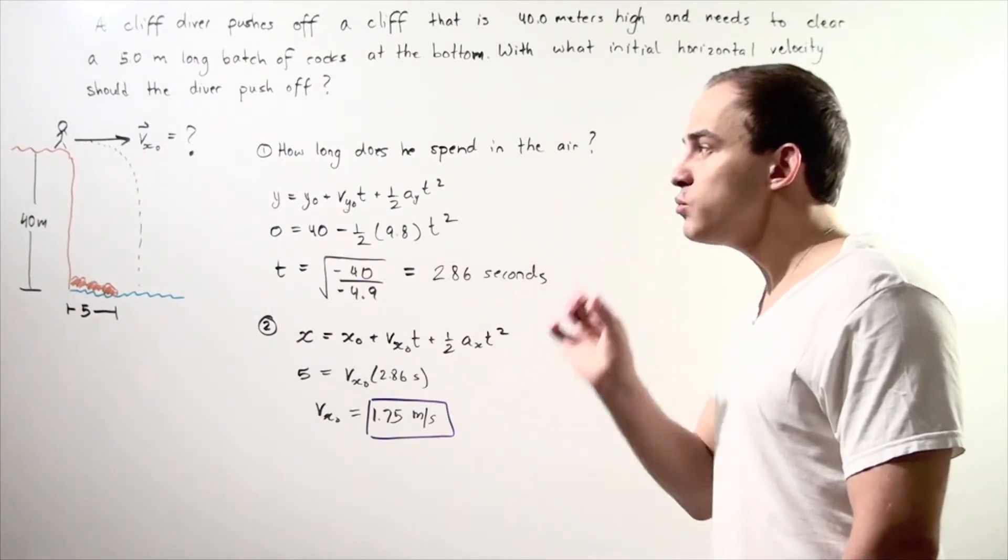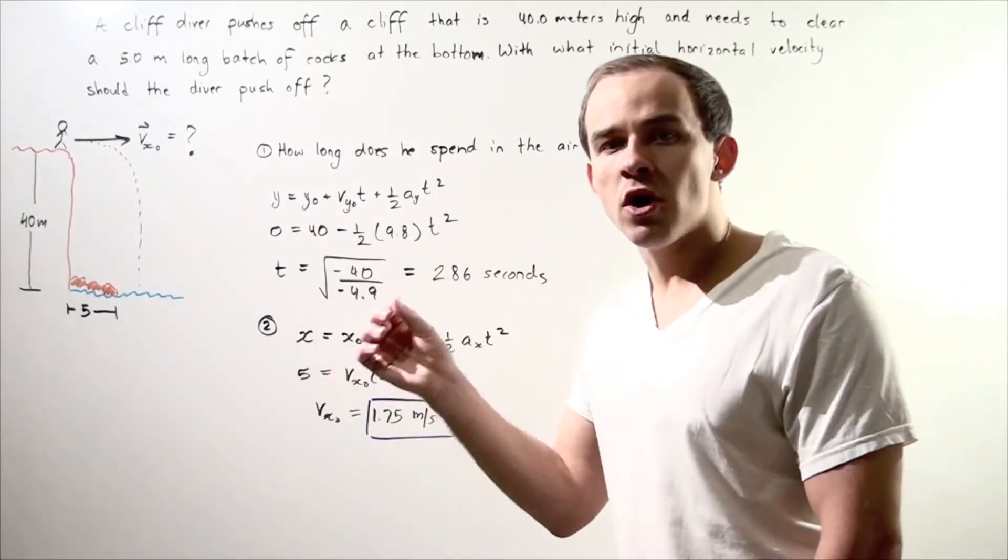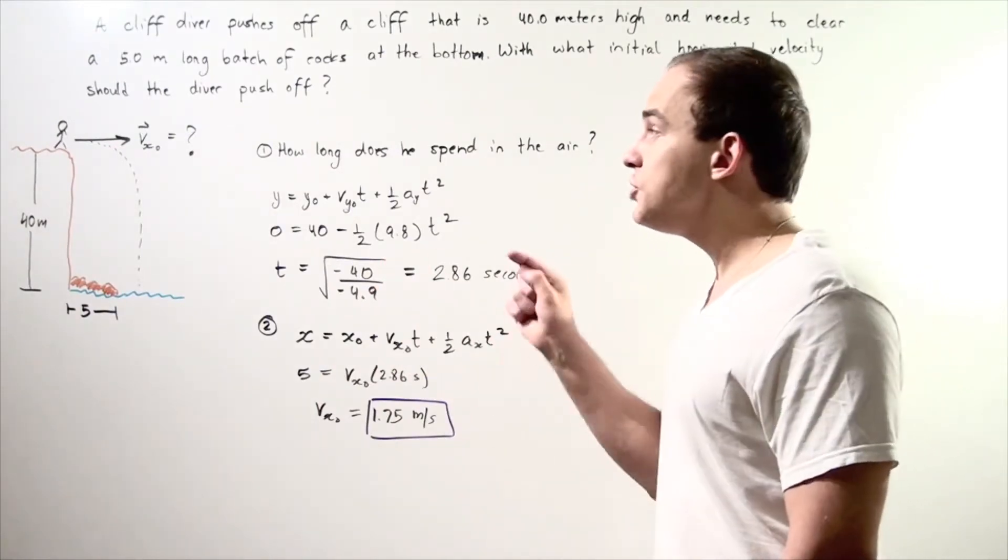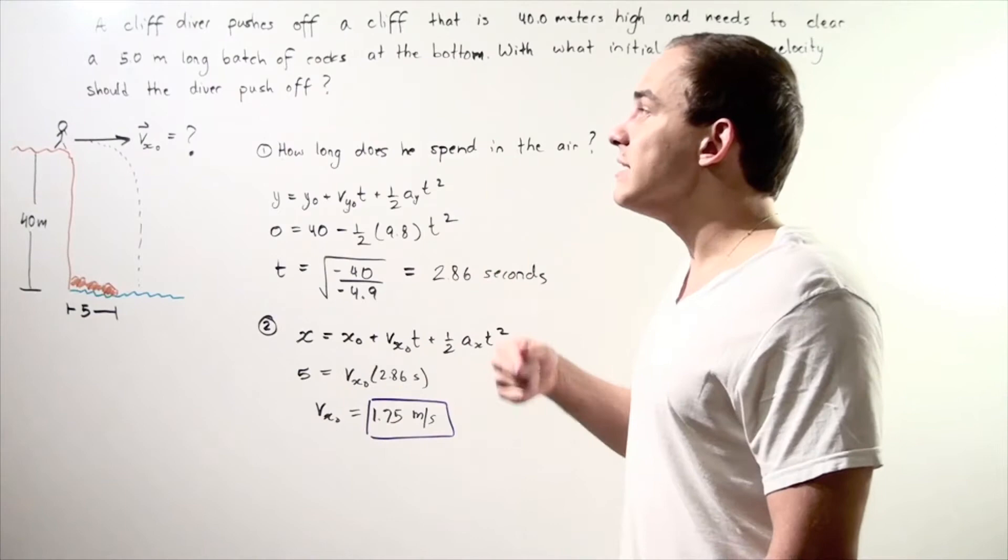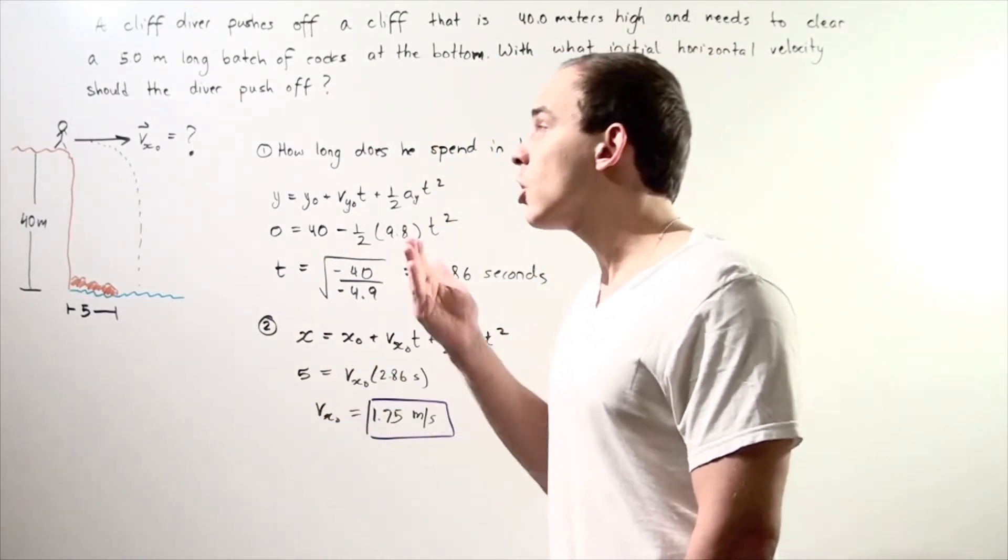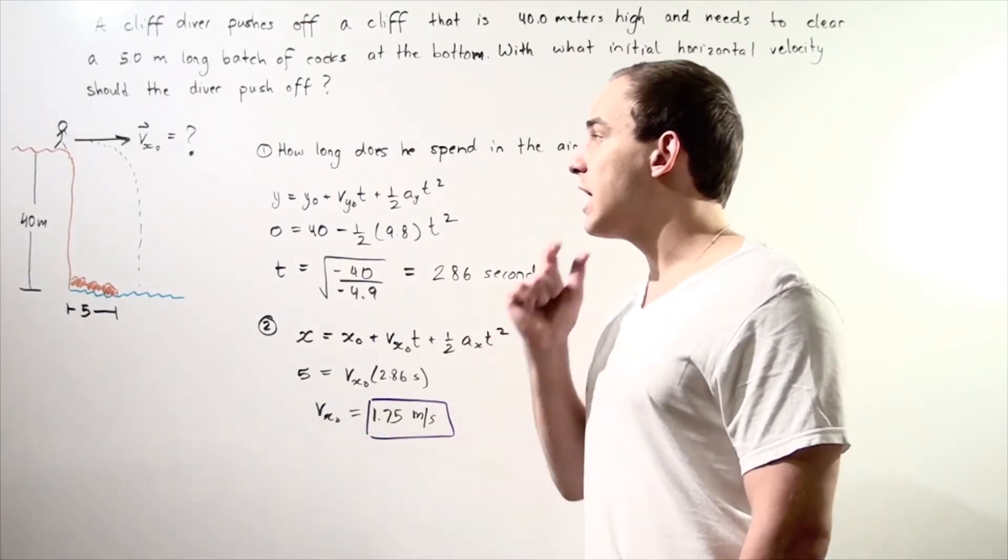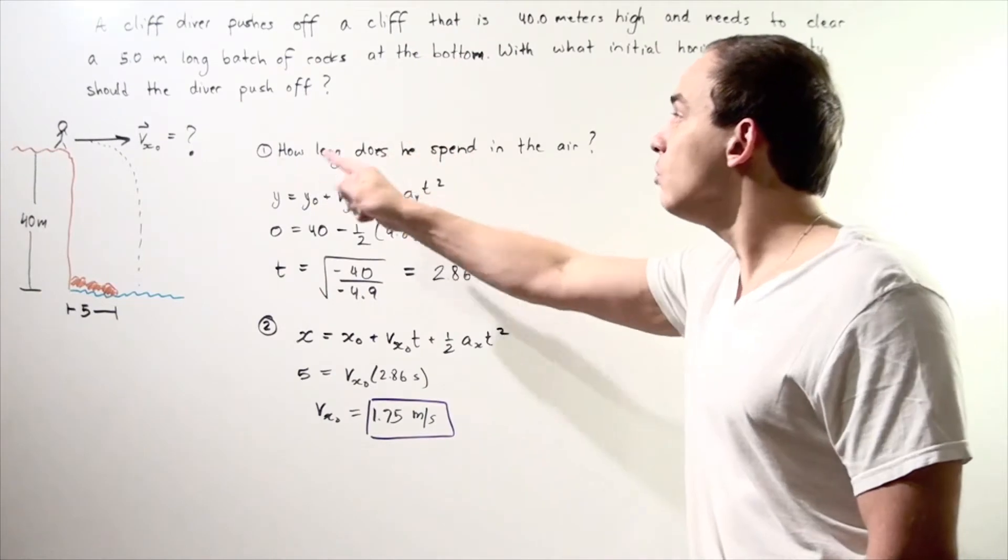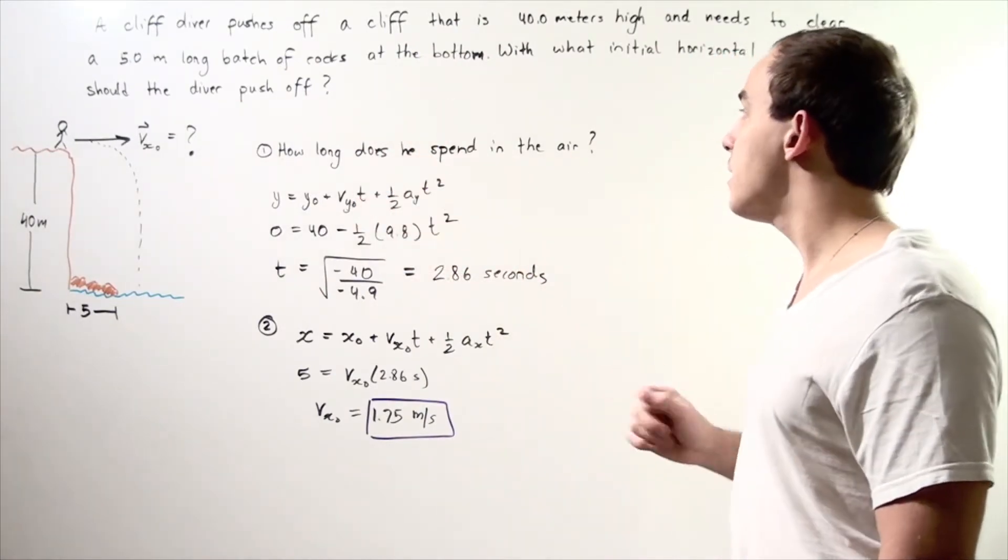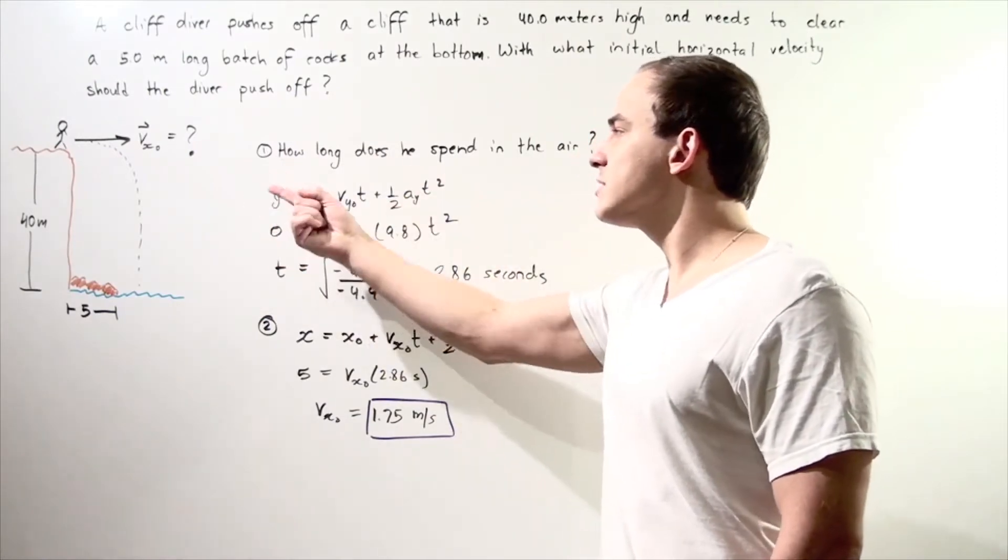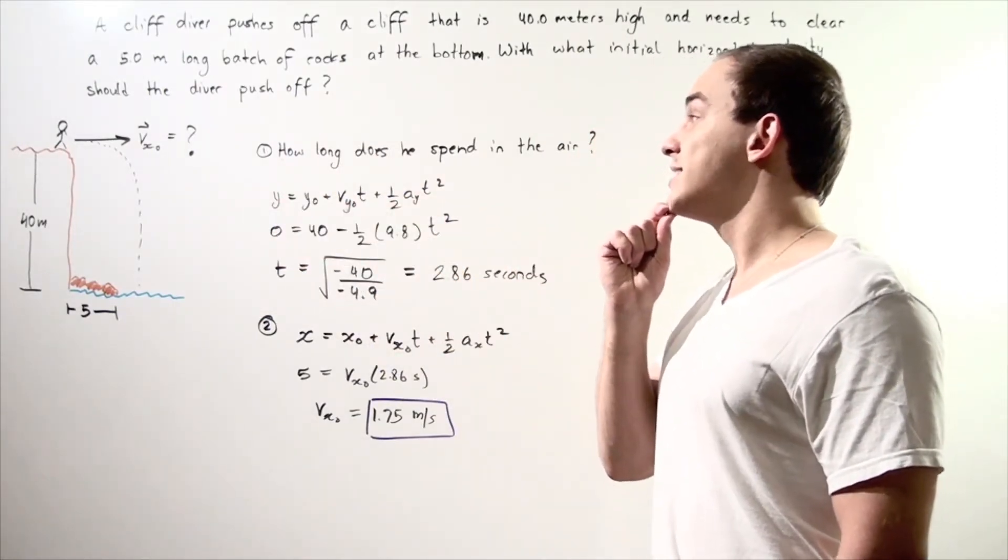With that said, first, we need to find how long our object, the person, spends in the air. We can use that time to then solve for our initial velocity along the x-axis, our horizontal initial velocity. Let's begin with the first one. How long does he or she spend in the air? Let's use the following equation to solve for our time value.